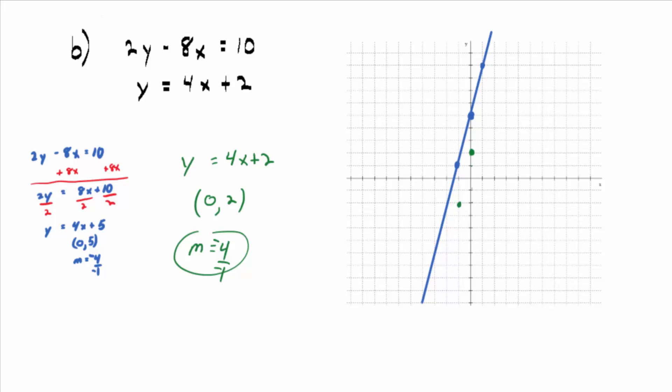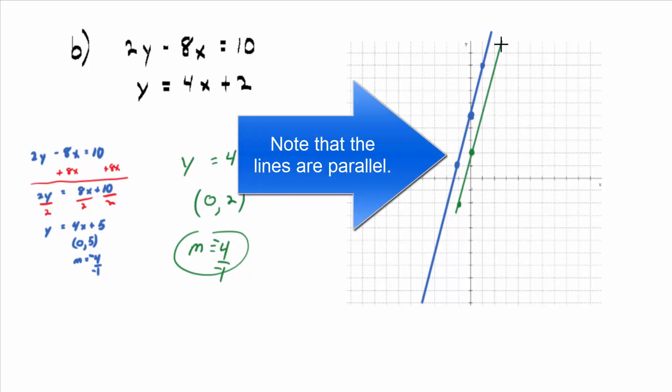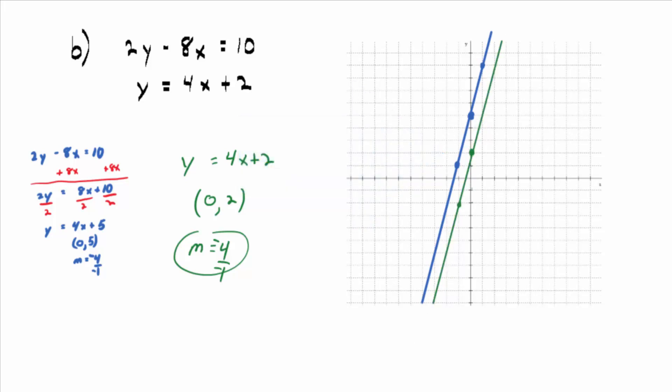And if I use my line tool once again, through these points, what do you notice about the two lines? Now, you might have noticed that before we even finished because they have the same slope, right? So if a solution occurs at an intersection point, is there going to be a solution here? No. No solution.